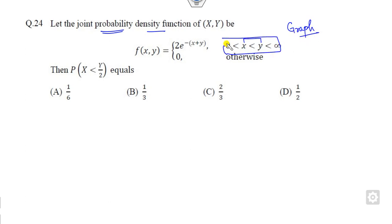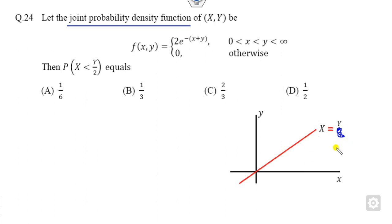The graph of this line - this is x=0, x=y, this is the line x equals y. You can see here this is the line of x equals y. Now which portion is that?